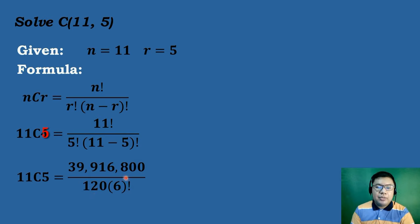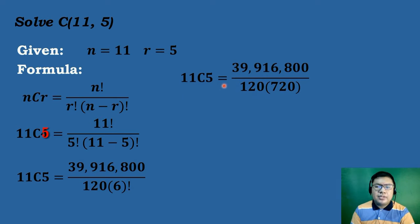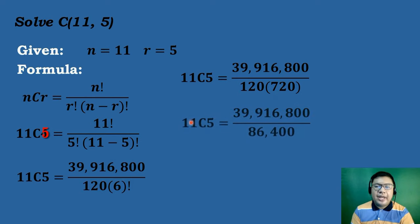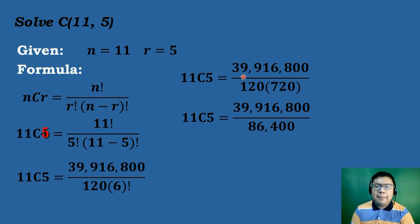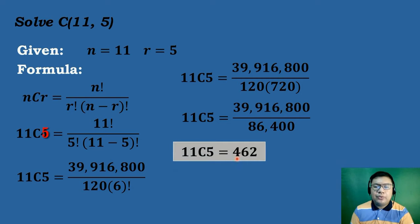So we have 11C5 equals 39,916,800 over 120 times 6 factorial. 6 factorial is 6 times 5 times 4 times 3 times 2 times 1, which equals 720. So we have 39,916,800 over 120 times 720, which equals 86,400. Dividing, 39,916,800 divided by 86,400 equals 462. Therefore, the combination of 11 objects taken 5 at a time is equal to 462.